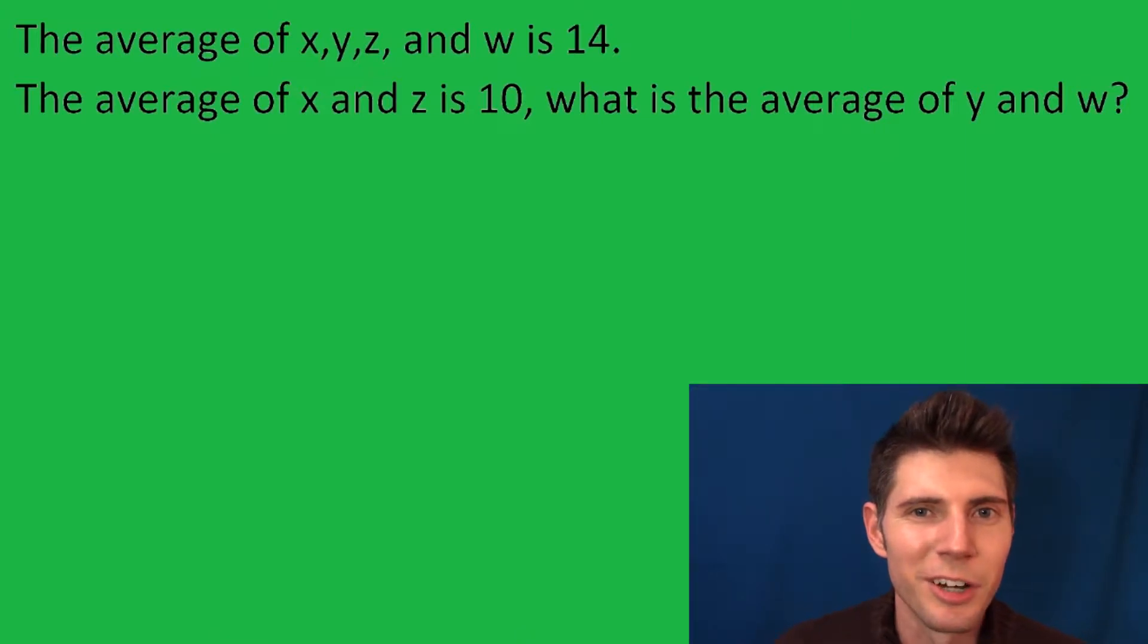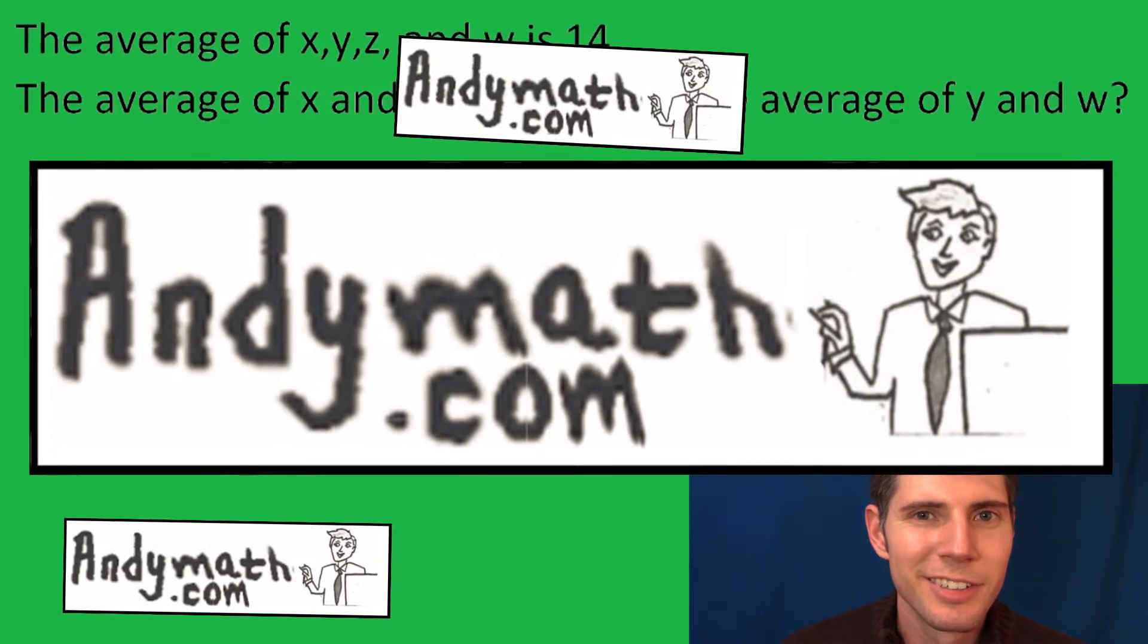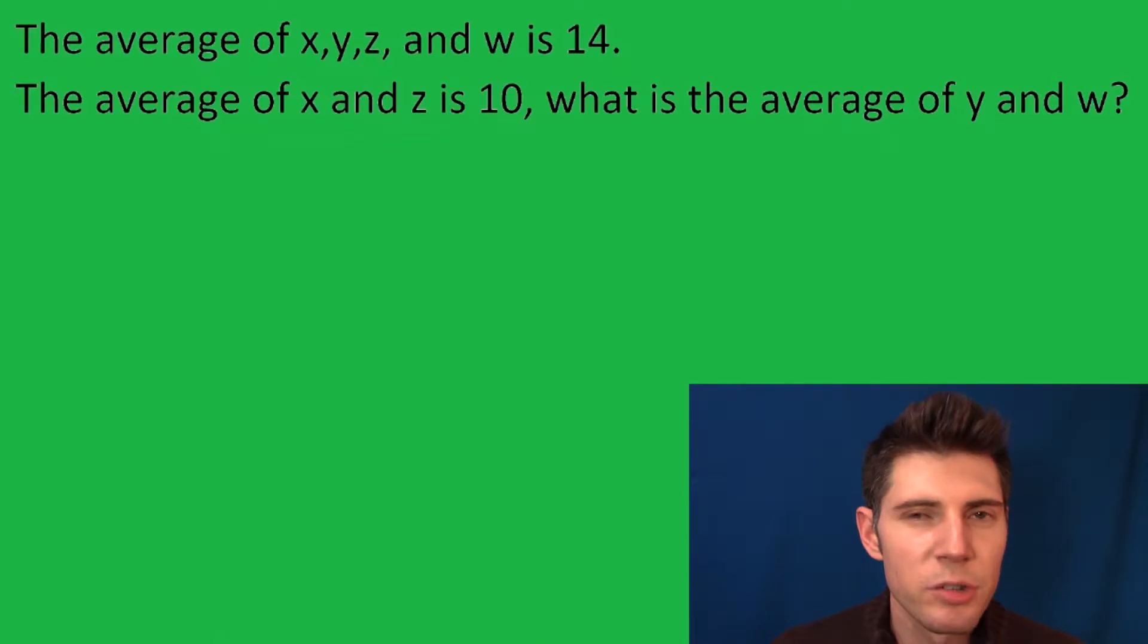Hey guys, welcome to this video. The average of x, y, z, and w is 14. The average of x and z is 10. What is the average of y and w? So let's just write each of these out.